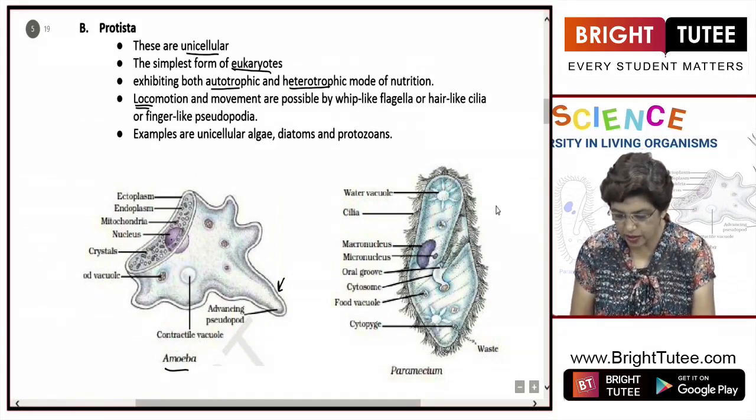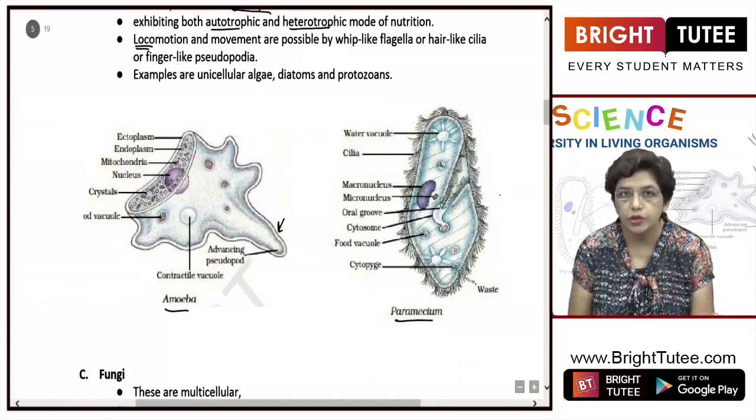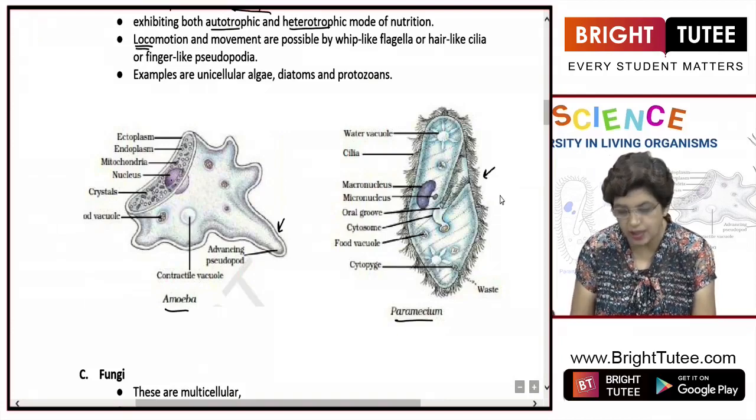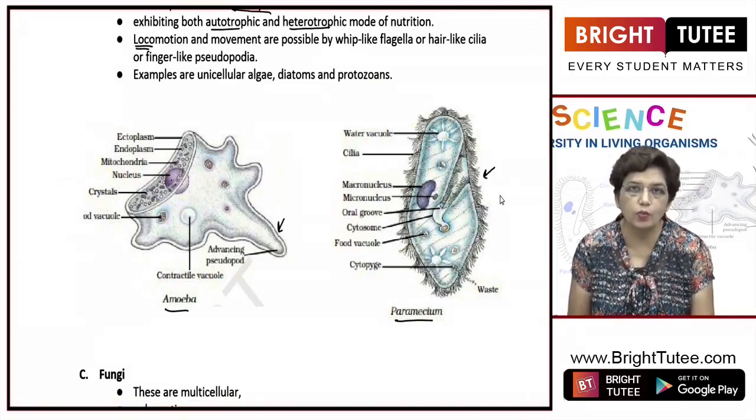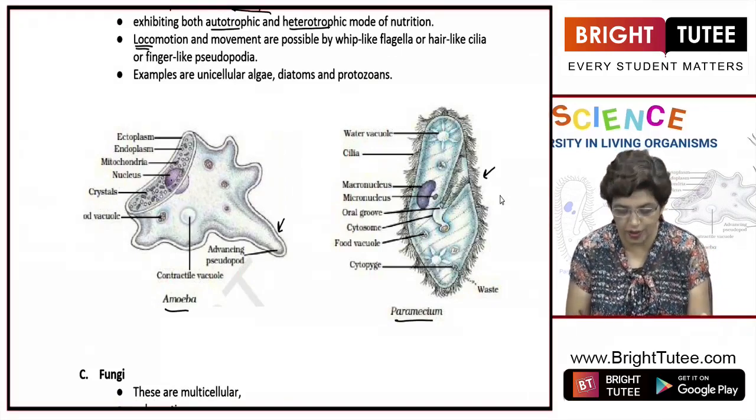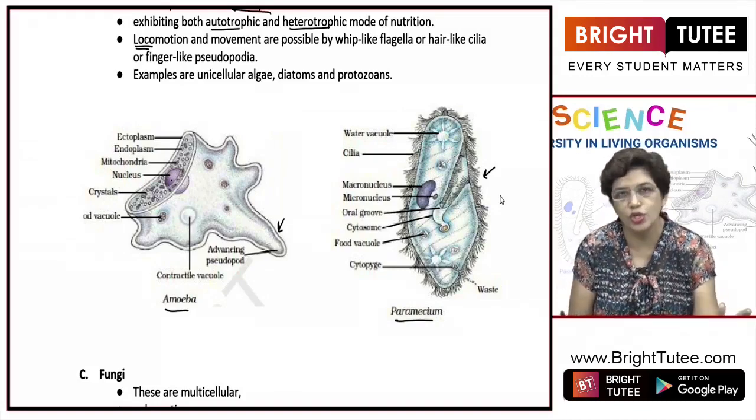The second diagram is Paramecium. This is also unicellular eukaryotic cell. They have nucleus. These tiny hairs are cilia which help in movement. Then there is one more organism under this, that is Euglena. What do they have? They have one single flagella, a single long thread-like structure which helps in movement.